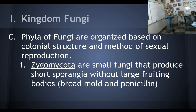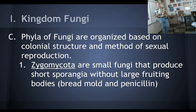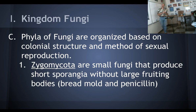Now the phyla of funguses — the different kinds. There are only a couple, not nearly as many as with protists. The phyla of fungi are organized based on colonial structure and the method of sexual reproduction — what does their fruiting body look like? We organized protists by how they move or by pigment color, but for funguses we organize them according to the structure of their fruiting body.